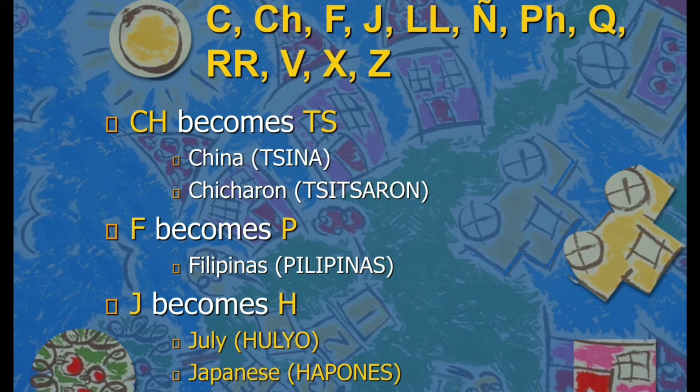Then F becomes P — like Filipinas becomes Pilipinas. J becomes H — like July becomes Hulyo, and Japanese becomes Hapones.